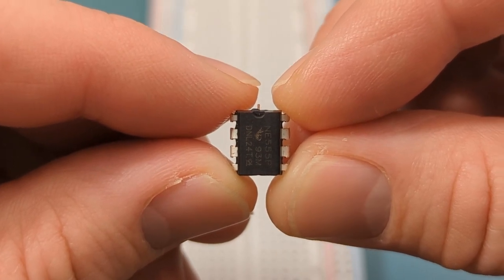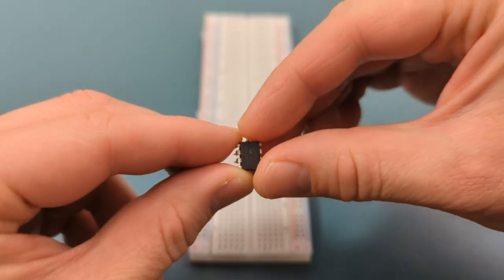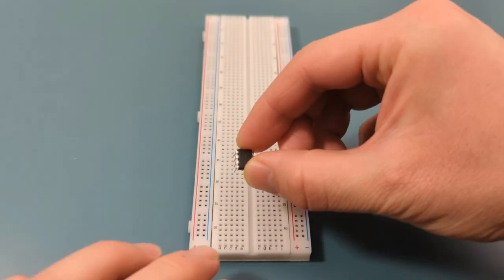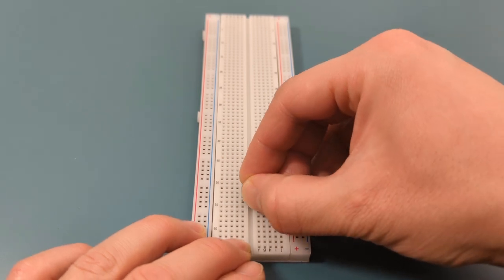Refer to the circuit diagram if you have questions about the circuit connections. Insert the 555 timer in the middle of the breadboard. Put the IC in the lower half of the breadboard, since the upper half is used for the switches.